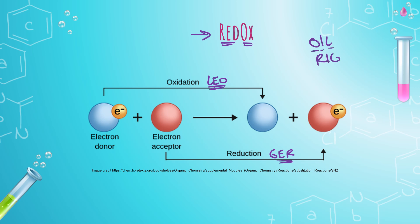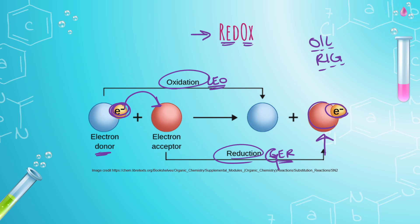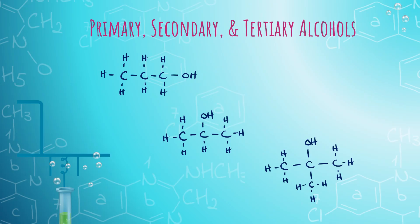Here we have an electron donor — here's that electron being donated to the electron acceptor. Notice that the electron acceptor has gained that electron; because it gained an electron, it was reduced. The thing that lost its electron was oxidized. We're going to look at the oxidation of alcohols, but interestingly different kinds of alcohols get oxidized in different ways. So first we're going to remind ourselves what it even means to be a primary, secondary, and tertiary alcohol.